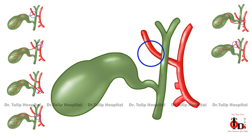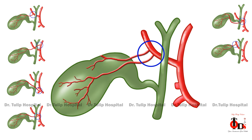There can be two separate cystic arteries — anterior and posterior — both arising from the right hepatic artery.